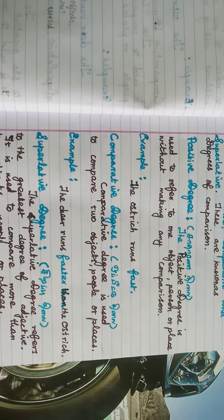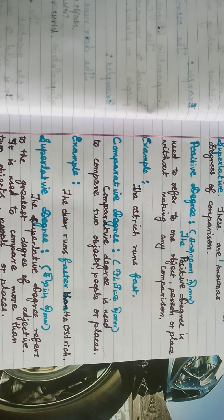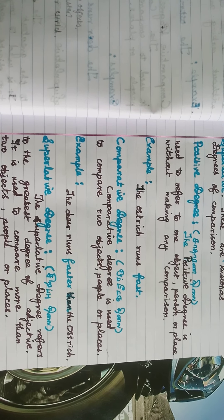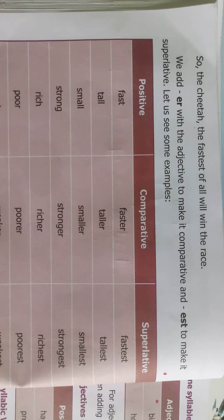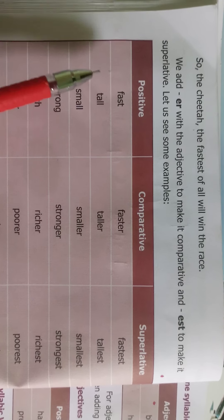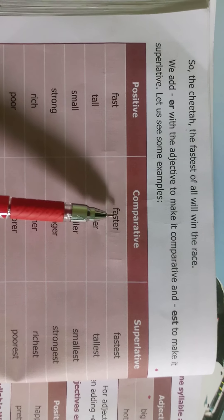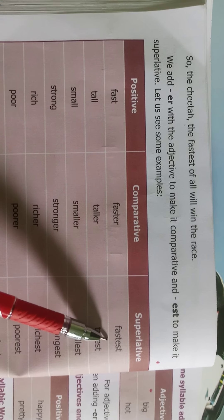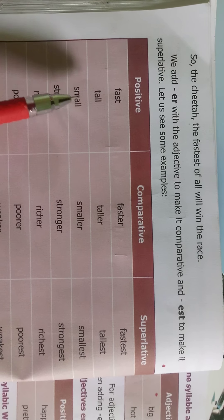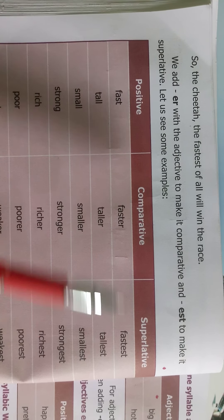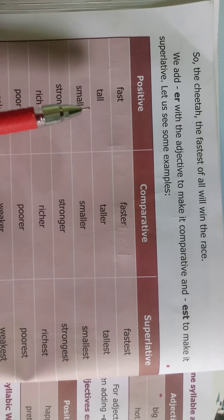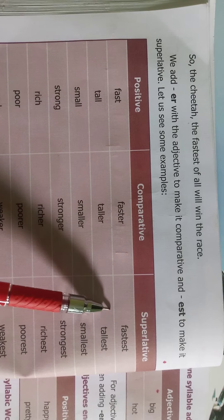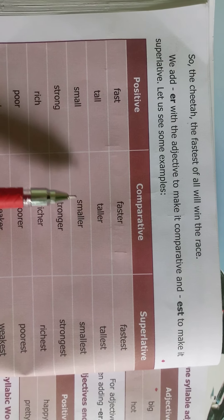In order to form comparative and superlative degrees, remember the following rules. We add 'er' to the adjective to make it comparative and 'est' to make it superlative. Look at the examples: fast, faster, fastest; tall, taller, tallest; small, smaller, smallest.